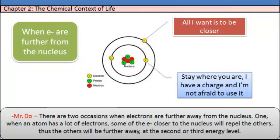There are two occasions when electrons are further away from the nucleus. One, when an atom has a lot of electrons, some of the electrons closer to the nucleus will repel the others. Thus, the others will be further away, at the second or third energy level.